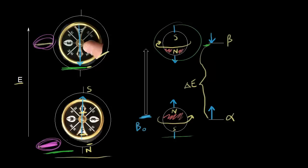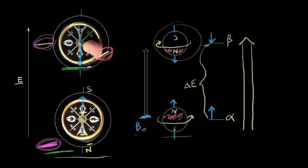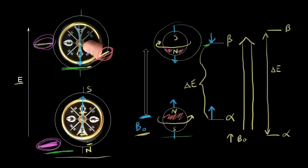Going back to the compass analogy: if we increased the magnetic field of the Earth, it would take more energy to make the compass point down. The same idea applies to the proton — if you increase the applied magnetic field B₀, you increase the energy difference between the two spin states. A bigger B₀ means a greater difference in energy between the alpha and the beta spin state.